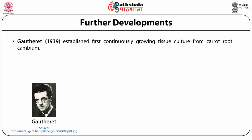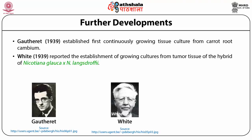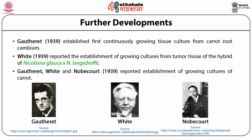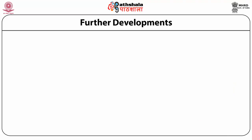Gautheret in 1939 established the first continuously growing tissue culture from the carrot root cambium. In the same year, White reported the establishment of growing cultures from the tumor tissue of the hybrid of Nicotiana glauca and Nicotiana langsdorffii. One thing worth noticing here is that one was dealing with species which today we call easy to grow — like carrot and Nicotiana, a solanaceous member — which respond well to tissue culture. In the mid-1930s it was discovered that auxin is a natural growth regulator, and vitamin B was found to be a very potent vitamin in plant tissue cultures.